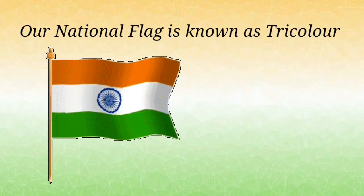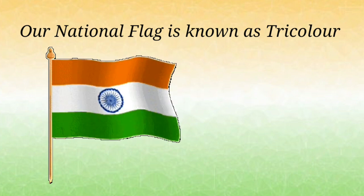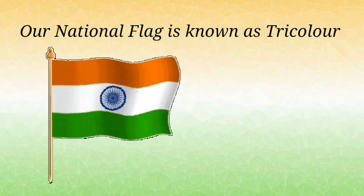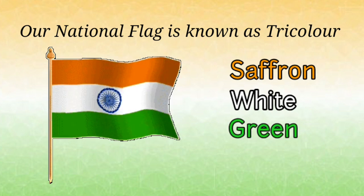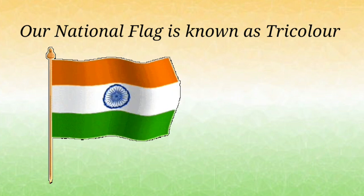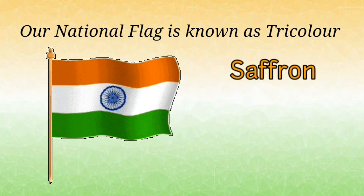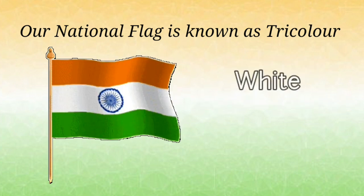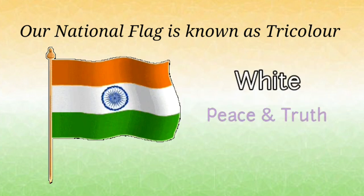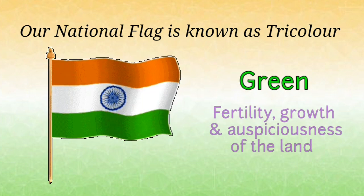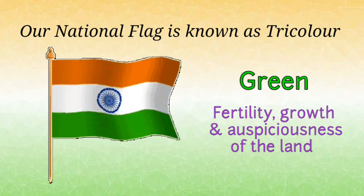Our national flag is known as the tricolor. It is called so because it has three colors — saffron, white, and green. The saffron color signifies the strength and courage of the country. The white color signifies peace and truth. The green color signifies the fertility, growth, and auspiciousness of the land.